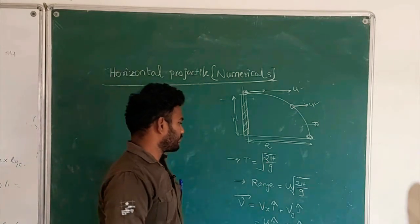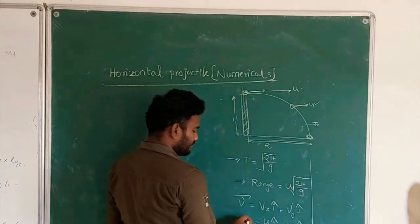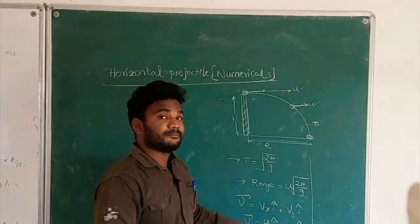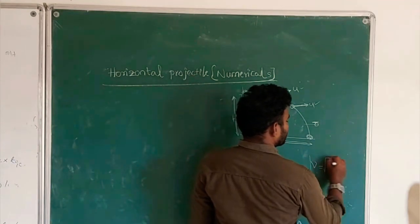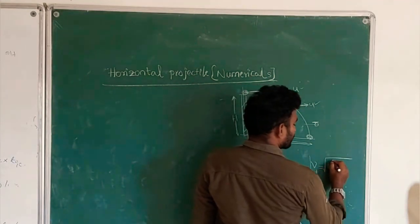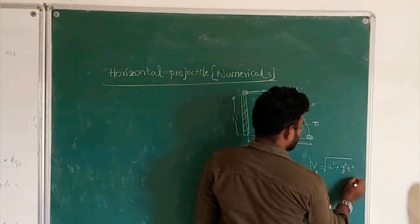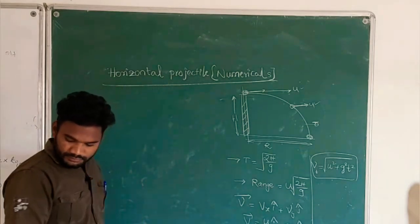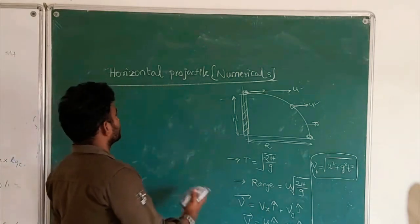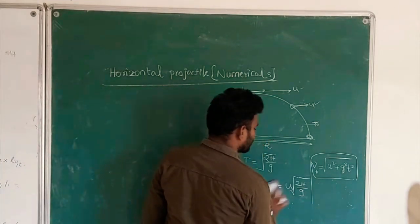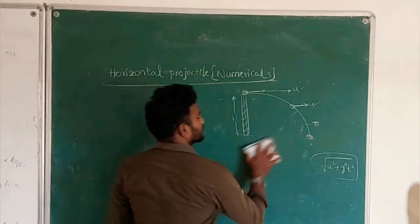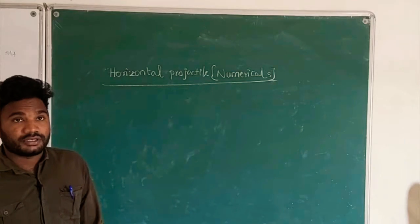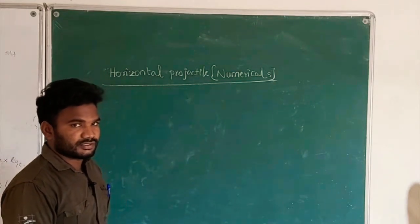These are the very important formulas. This is the vector form. If you want the magnitude of velocity at any time t, the formula is V = √(U² + G²t²). Based on these formulas we can solve any problem. Once you watch the horizontal projectile video, then you can come to this and understand everything here.